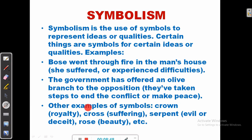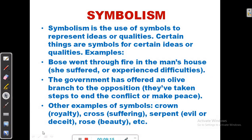Let's look at other examples of symbols. A crown stands for royalty. A cross refers to suffering. A serpent refers to evil or deceit, while a rose — the flower — stands for beauty. These are clues that will help you interpret idioms.